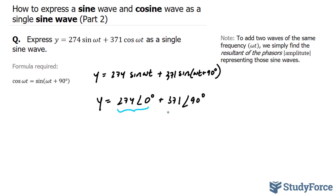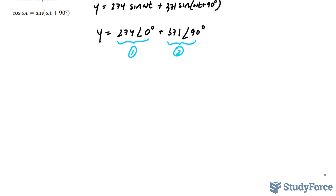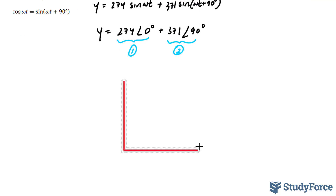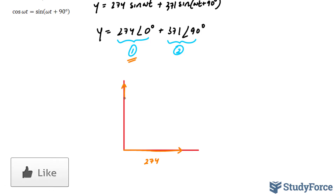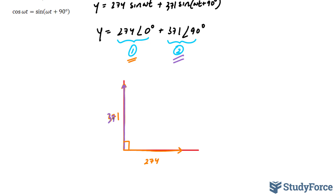I'll treat these as individual vectors — vector 1 and vector 2. The resultant of these two vectors will serve as my final amplitude and angle for my final sine wave. I'll draw these two vectors out on a plane. This vector, shown in orange, represents 274 at an angle of 0, making an angle of 0 along the x-axis. And 371 is represented as this line going directly up, because that's 90 degrees. I'll show this in purple so you can differentiate between the two.